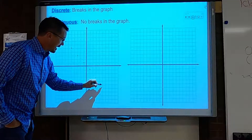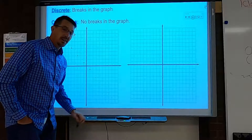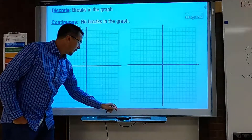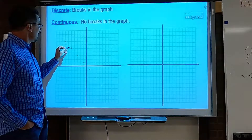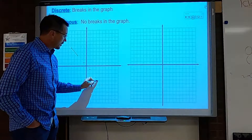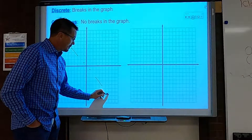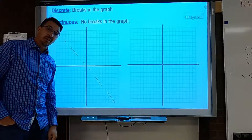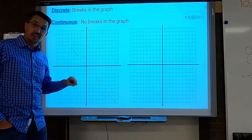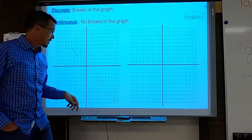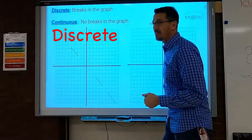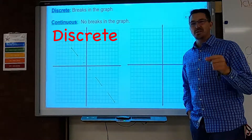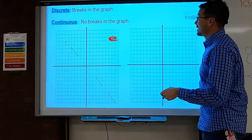This graph right here has a bunch of points. It's considered to be discrete because it does not connect. Even if I spread the points out here and there, it would still be considered discrete because it does not connect. So discrete means it doesn't connect, but usually 99% of the time, discrete is when you just have points and not lines.